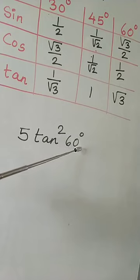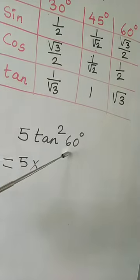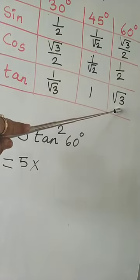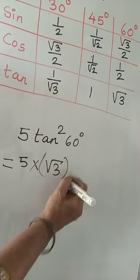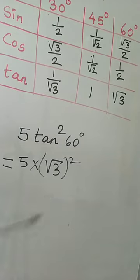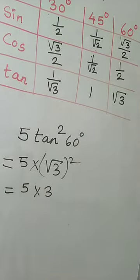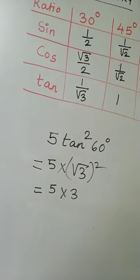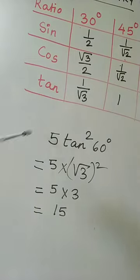Next, 5 tan square 60 degrees. So what do we do here? 5 multiplied by, what is tan 60 degrees? The value is root 3. So I will now write root 3 square. And what is root 3 square? 5 multiplied by 3, which gives you 5 3s are 15. So I am taking single ratio for you to understand how to do the operations in these kind of sums.